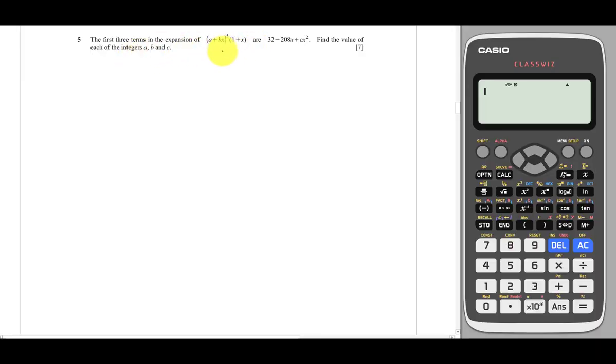Today we'll discuss this binomial expansion question from IGCSE, I believe from the October-November 2020 Paper 1. This is a seven mark question. They give us the first three terms: 32 minus 208x plus cx squared after this expansion, and ask us to find the value of a, b, and c.